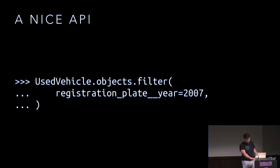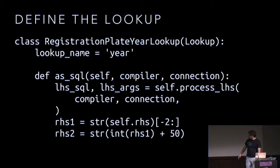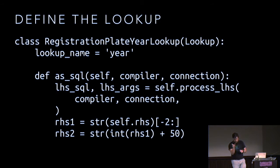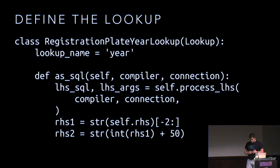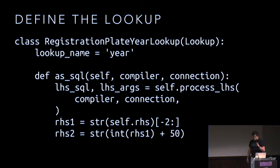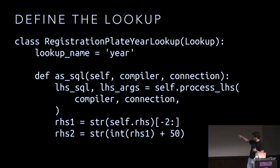We want to query used_vehicle.objects.filter(registration_plate__year=2007). The double underscore year is deliberately chosen because it looks just like it would for a date field. So we're going to define a custom lookup — this is all documented in the ORM. Our registration plate lookup has a lookup_name of 'year'. The as_sql method takes a compiler and a connection. We call process_lhs to get the left-hand side SQL and arguments, then extract the two characters from the year string, add 50, and get our two parameters — so 2007 gives us '07' and '57'.